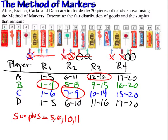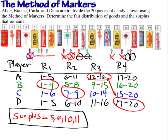Now that player A got round 3, player D receives round 4: items 17 through 20. There's no gap between 16 and 17, so no more surplus is added. The final distribution is: Alice gets items 12 through 16, Bianca gets items 1 through 4, Carla gets items 7 through 9, and Dana gets items 17 through 20. There is a surplus of items 5, 6, 10, and 11. To share the surplus, another fair division method could be used — divider-chooser, lone chooser, or lone divider — or the surplus could simply be set aside for another day.